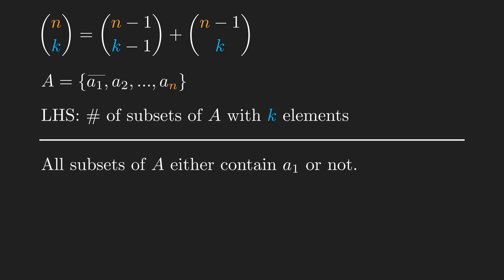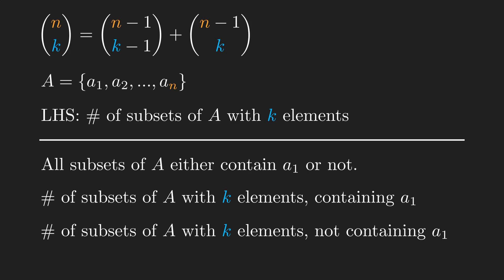Let's consider the first element of A called A1. All subsets of A, including the ones with k elements, either contain A1 or they don't. Let's count each of the cases separately. For subsets containing A1, there remains k-1 elements to be selected from the remaining n-1 elements of A. The number of ways to do this is n-1 choose k-1. For subsets that do not contain A1, all k elements should be selected from the remaining n-1 elements of A. The number of ways to do this is n-1 choose k. Since there's no overlap between the two cases, their sum will be equal to the left hand side.